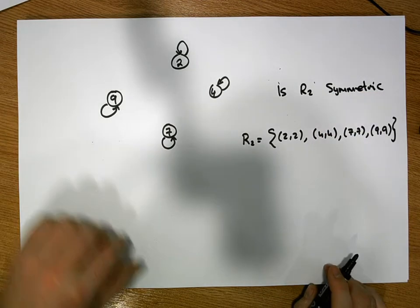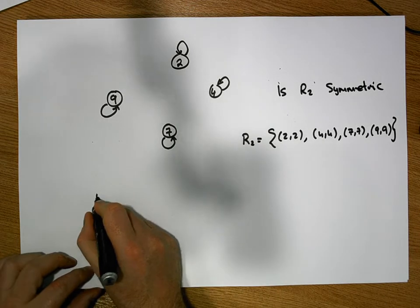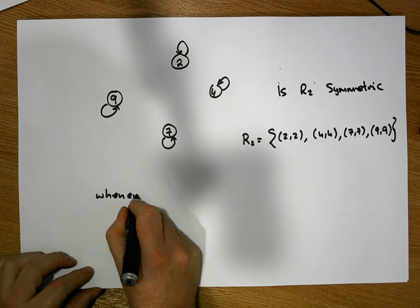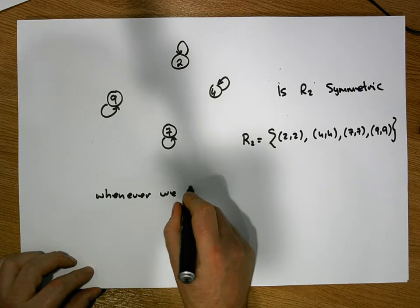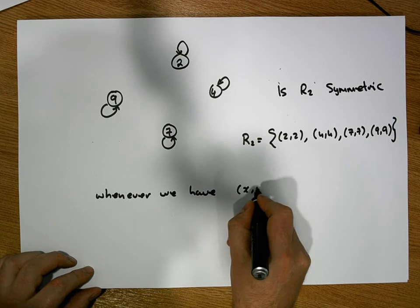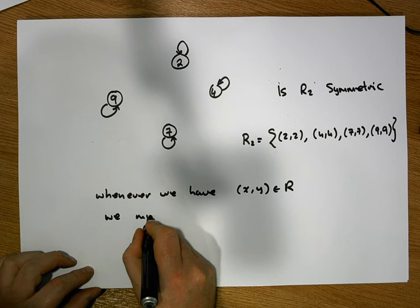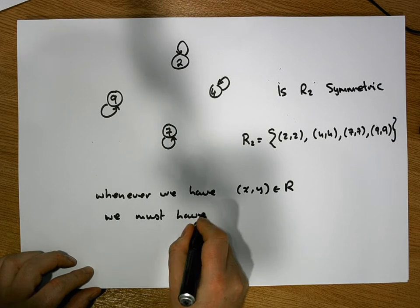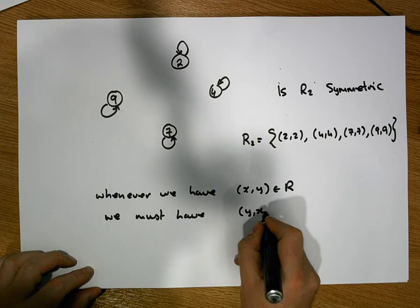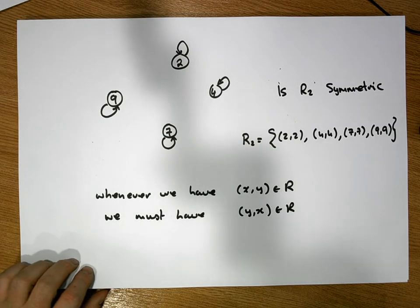Don't forget our definition of symmetry says, whenever we have an ordered pair (x,y) being elements of R, we must have (y,x) being elements of R also.